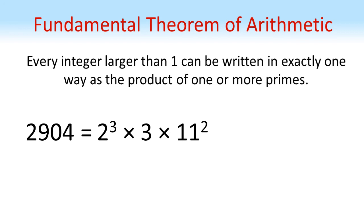The 2 is cubed, 3 is just to the power of 1, and the 11 has to be squared. This is the only way we can write the number 2,904 as a product of prime numbers. And this applies, as the theorem says, to every integer larger than 1.